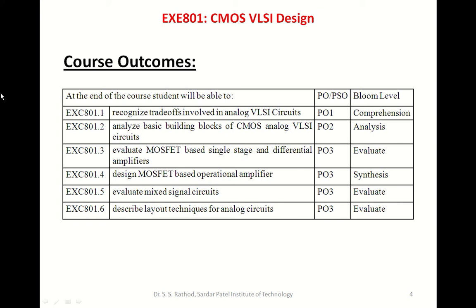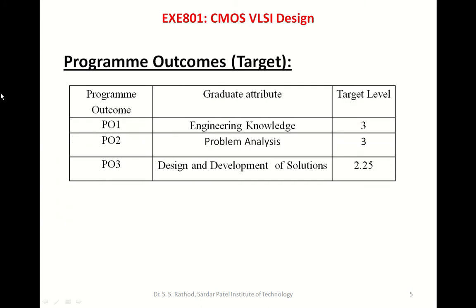This course expects higher level thinking skills to be developed in students. In short, there are three program outcomes to be expected at a target level of three, three, and two point two five — that is engineering knowledge, problem analysis, and design and development of solutions respectively.